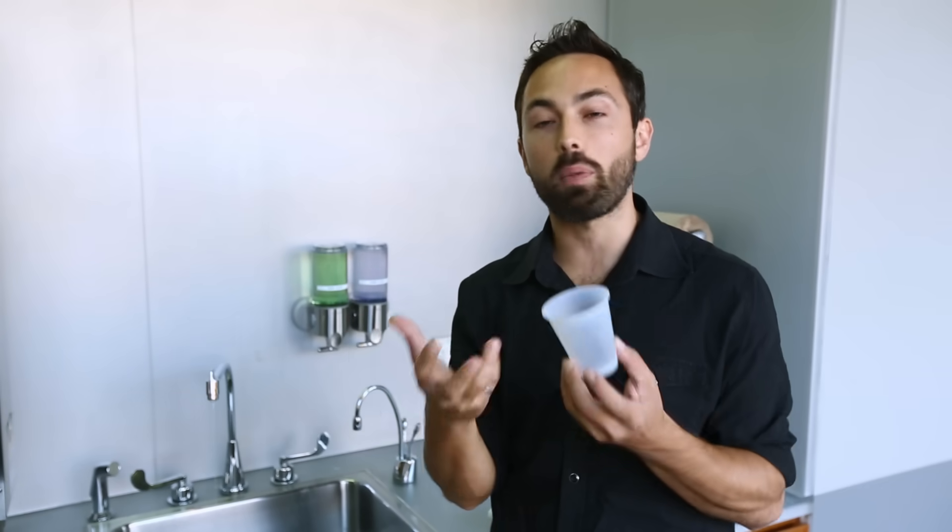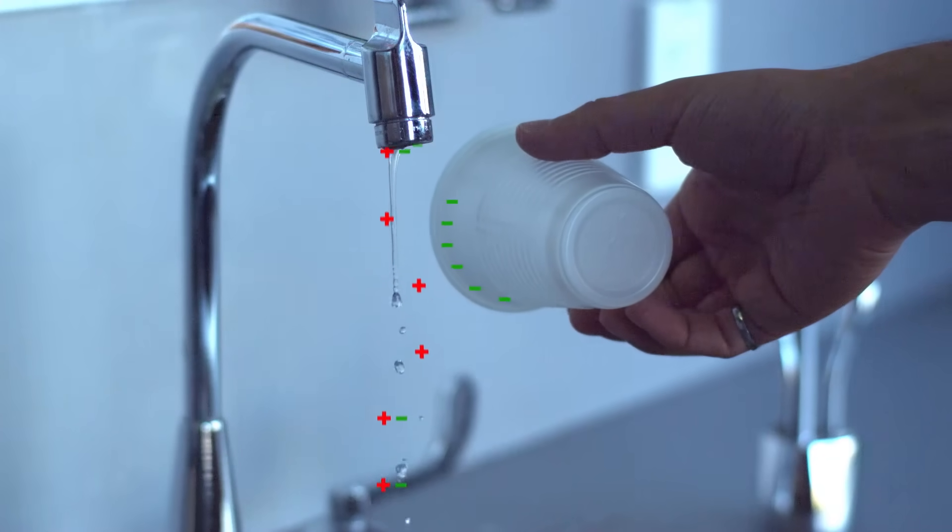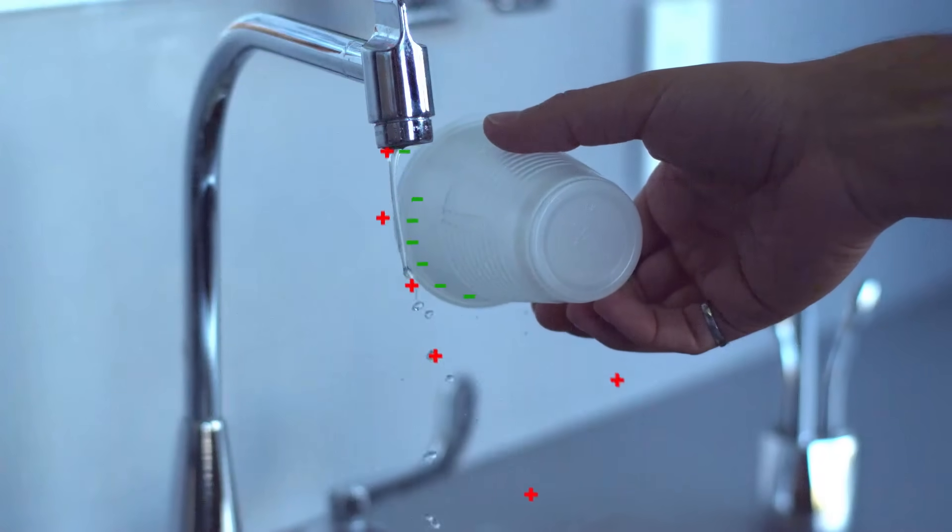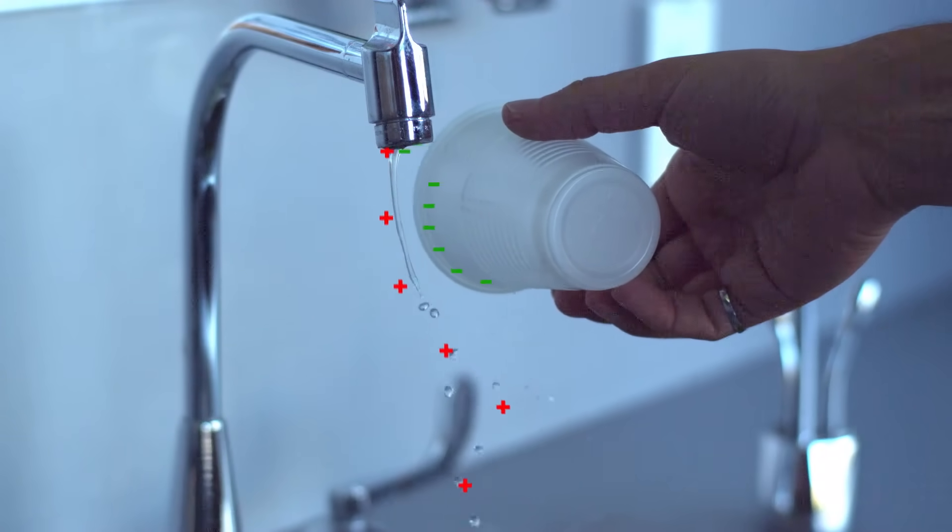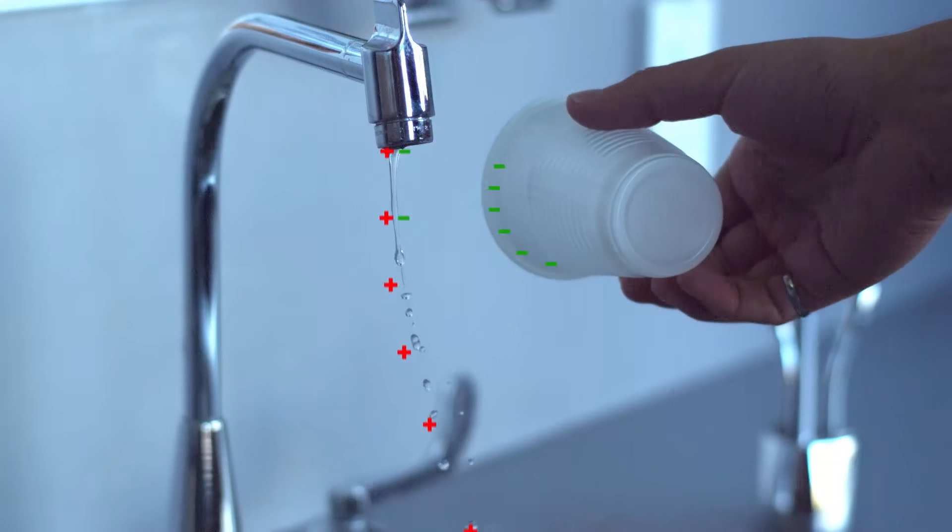And once it breaks up into droplets, those droplets have a positive charge that they can't get rid of. So now those positive droplets are attracted to the negatively charged cup. And you can see those droplets swirling around the cup because they are so attracted to it.